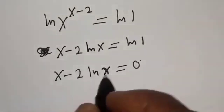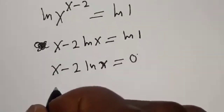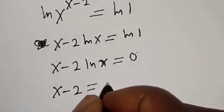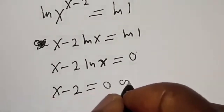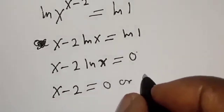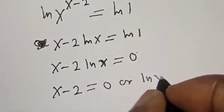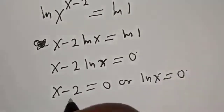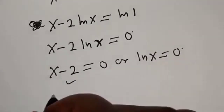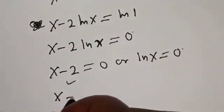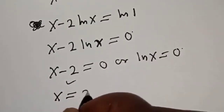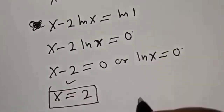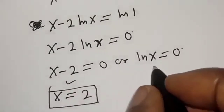We have two cases here. Either s minus 2 is equal to 0, or natural log of s is equal to 0. From the first case, s is equal to 2. That is the first value of s.